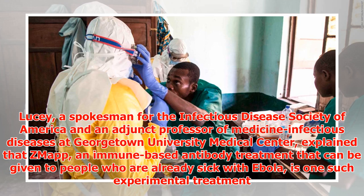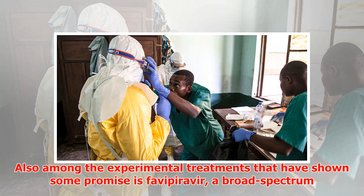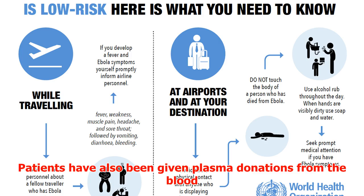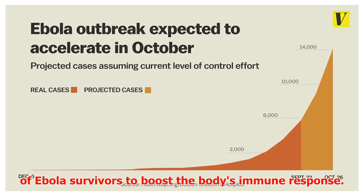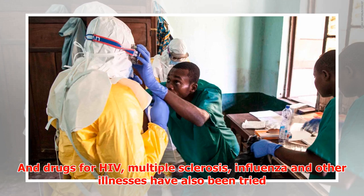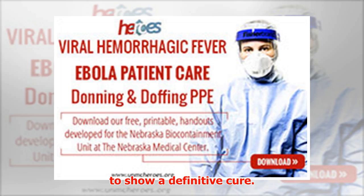Dr. Daniel R. Lucey, a spokesman for the Infectious Disease Society of America and an adjunct professor of medicine at Georgetown University Medical Center, explained that ZMapp — an immune-based antibody treatment that can be given to people already sick with Ebola — is one such experimental treatment. Also among the experimental treatments showing some promise is favipiravir, a broad-spectrum antiviral drug intended to treat a range of viruses. Patients have also been given plasma donations from the blood of Ebola survivors to boost the immune response, and drugs for HIV, multiple sclerosis, influenza, and other illnesses have been tried. None of the trials, however, seemed to show a definitive cure.